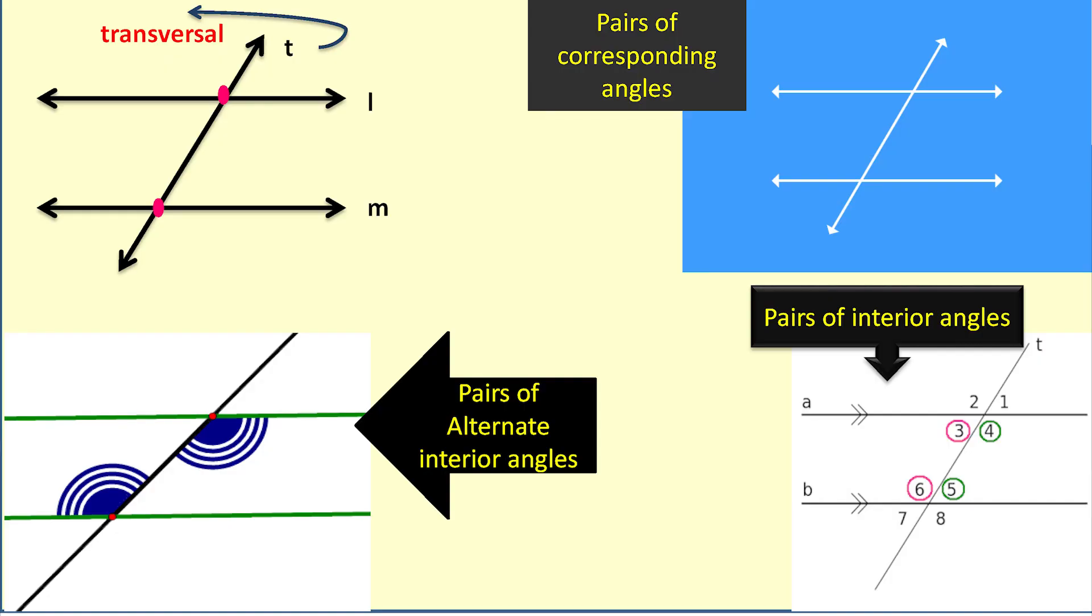We have line L parallel to line M, and we have a line T. It intersects both the lines in two distinct points. This line T is called a transversal. When two parallel lines are cut by a transversal, then each pair of corresponding angles are equal, each pair of alternate interior angles are equal, and each pair of interior angles on the same side of the transversal are supplementary.